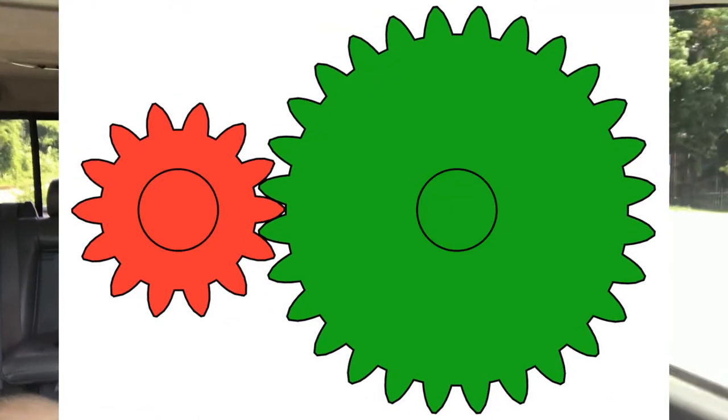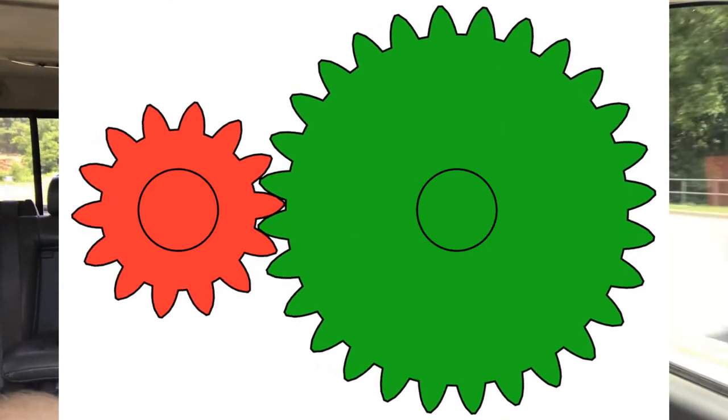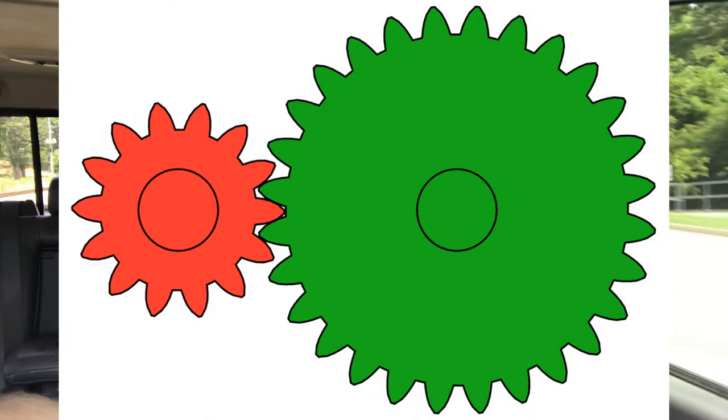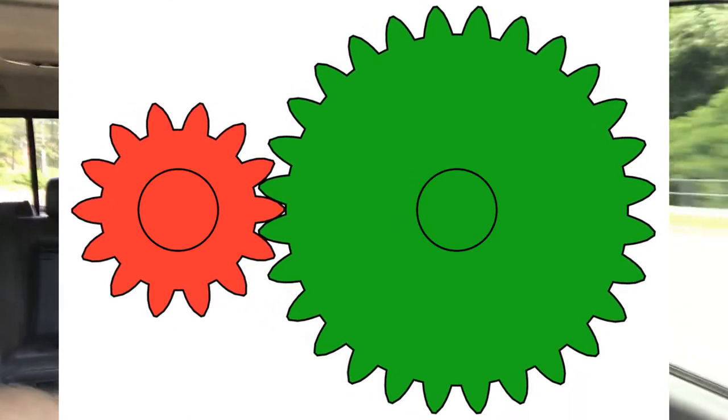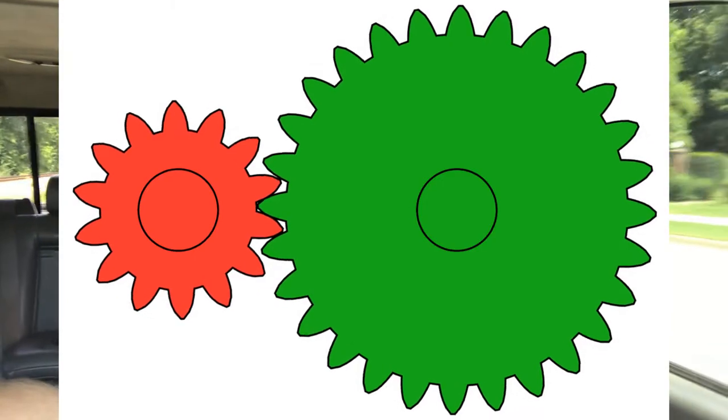Now that you know the basics — what different things count as gearing on your vehicle — we're going to get into the concept of gearing and describe it. This is really the part people don't quite understand: exactly what gear ratios are and how they affect you. I'm going to put this up on the screen. This is just an example of two gears running on each other — not an exact representation of anything in your vehicle, but it serves as a good example.